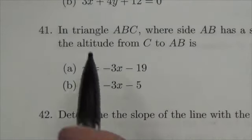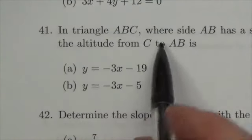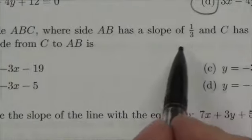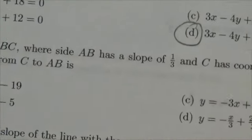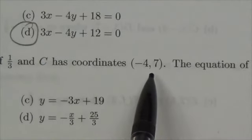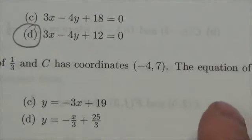Hi everyone. In this question we have triangle ABC where side AB has a slope of 1/3 and C has coordinates (-4, 7). The question asks for the equation of the